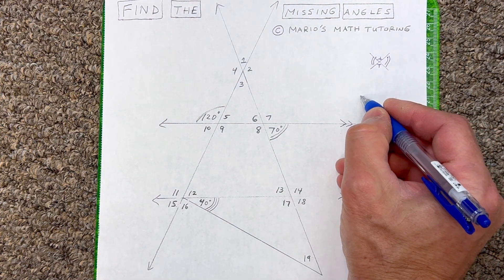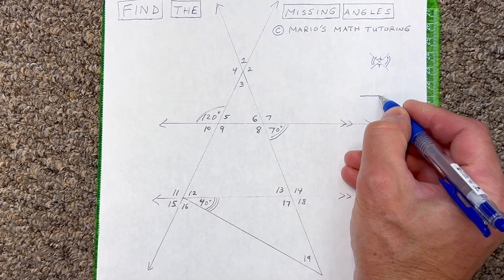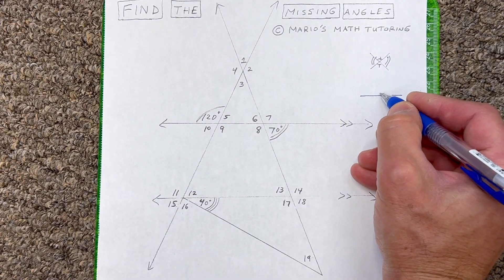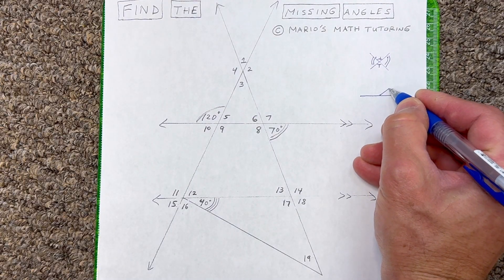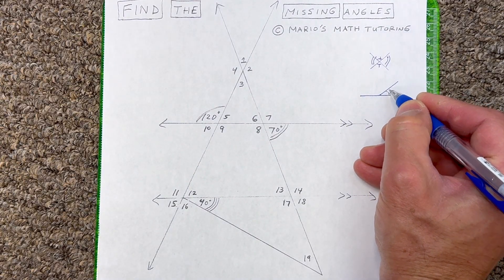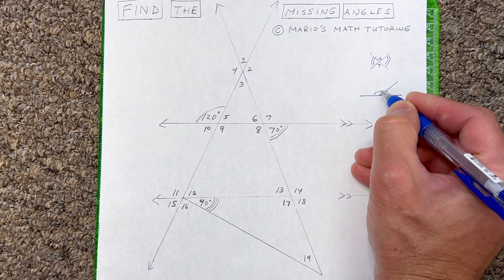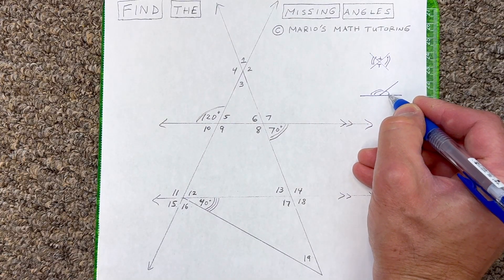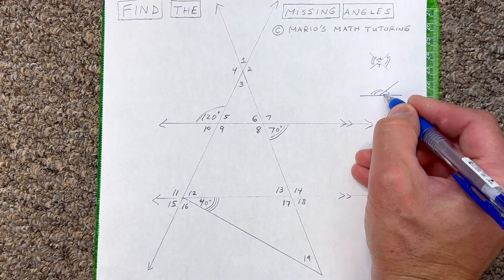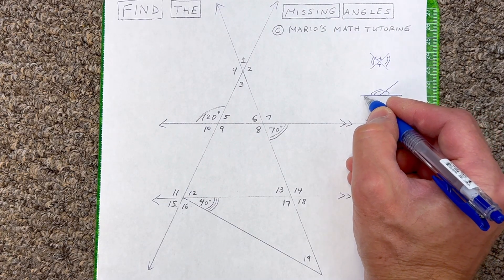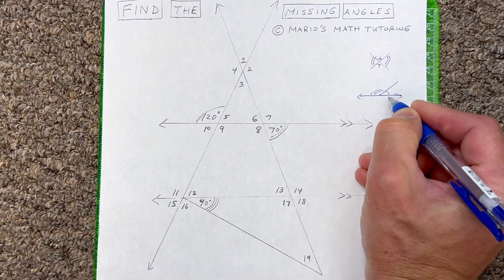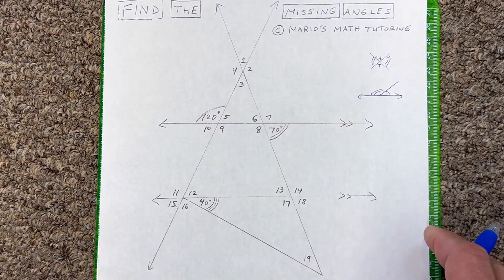Another thing to be on the lookout for is when you see a straight line, the angles are going to add up to 180 degrees. These are called a linear pair — 'pair' meaning two like a pair of shoes, 'linear' meaning they form a line — 180 degrees.